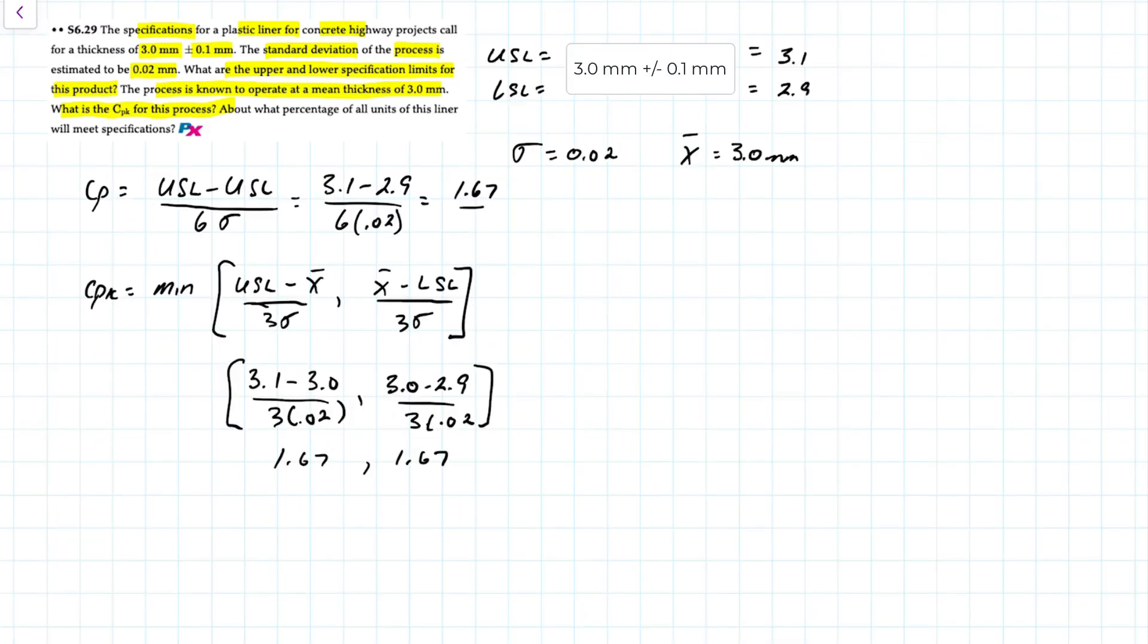If we visualize what this looks like, we have a mean of 3 millimeters and the upper specification is 3.1 and the lower specification is 2.9.